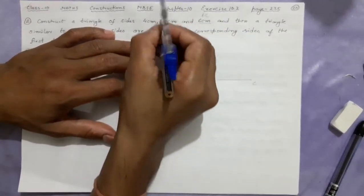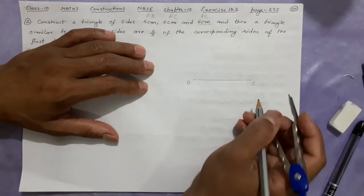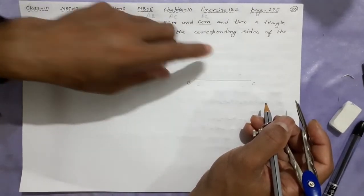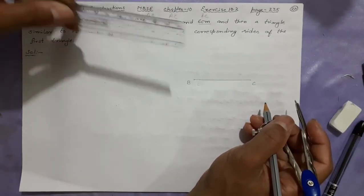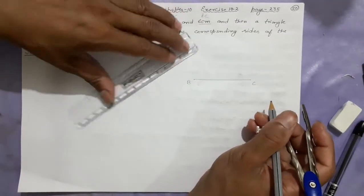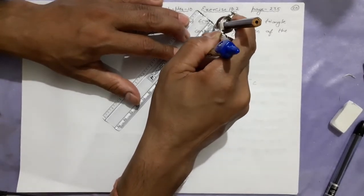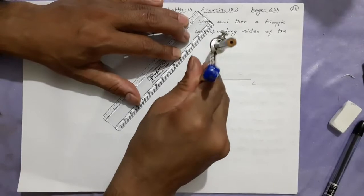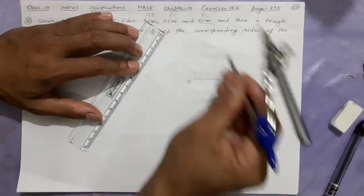If you think this is BC, you can think this is AC, you can think this is AB. Now, from B, if I am going to meet A, how long will it be? B to A, it will be 4 cm. So what is 4 cm here? 4 cm will be like this. Cut it here, 4 cm.